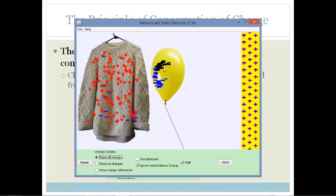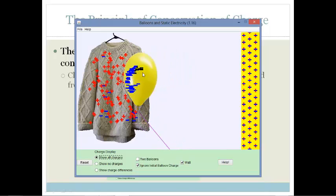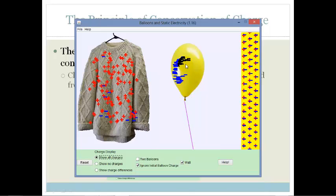Now what has happened? Do you see that the electrons have transferred from the jersey to the balloon? There hasn't been a creation or destruction of any charges. They've merely been transferred from one form to another.